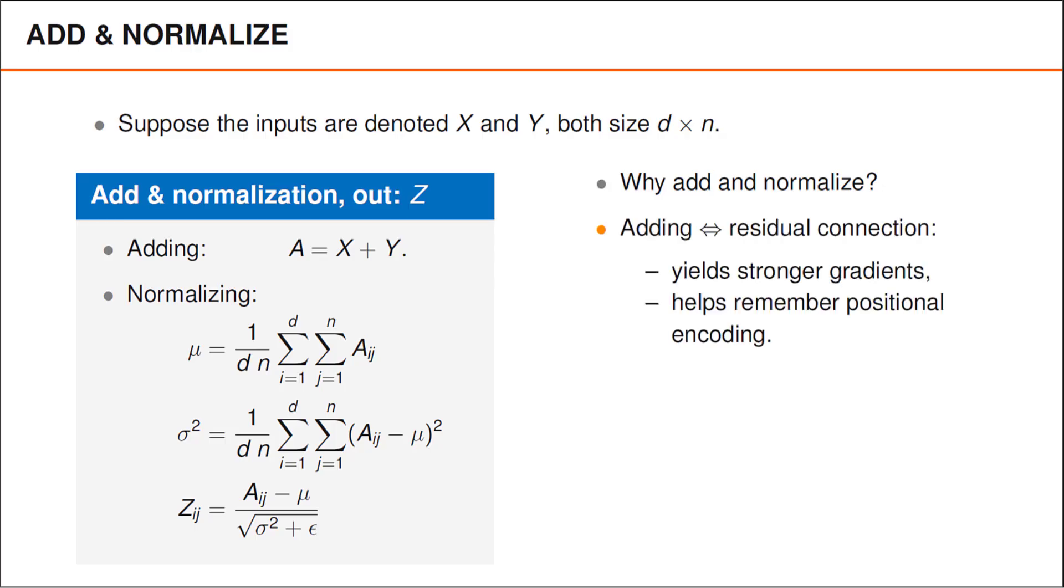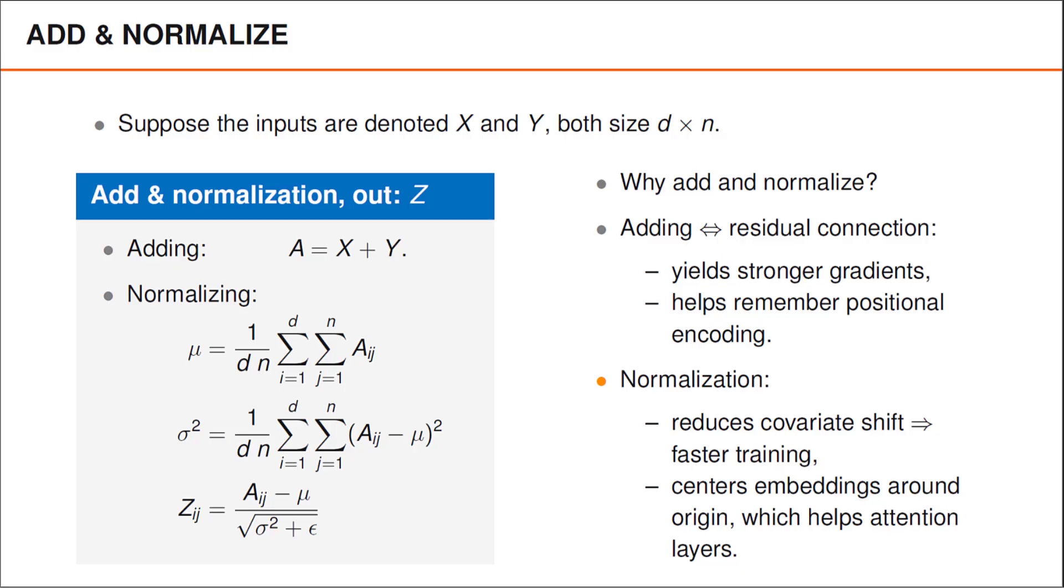Without going into too much detail, the add function is an example of a residual connection, which often yields better learning due to stronger gradients. In this context, it's also possible that the residual connection helps the network remember the positional encoding. The usual motivation for the normalization is that it enables larger learning rates, and thereby faster training, by reducing something known as the covariate shift. Normalization also ensures that word embeddings are centered around the origin, which may be useful for the attention layers, where we compare inner products.